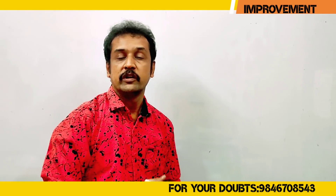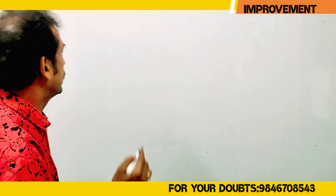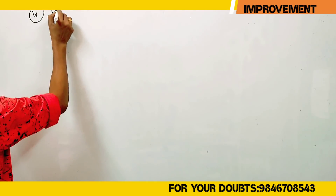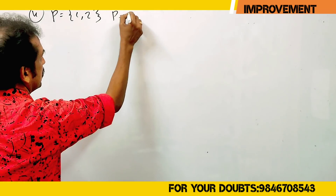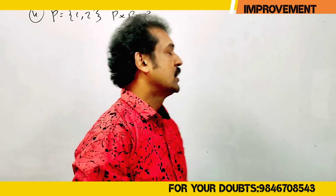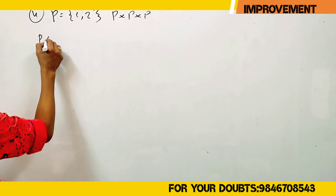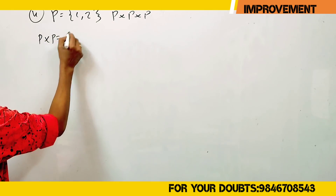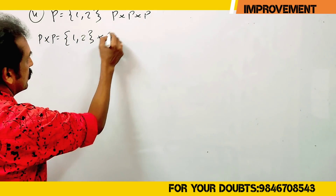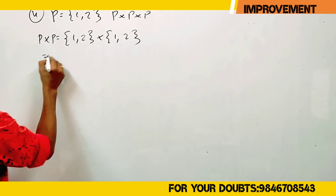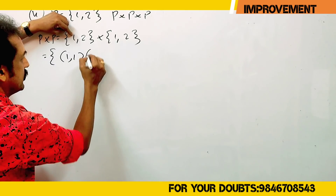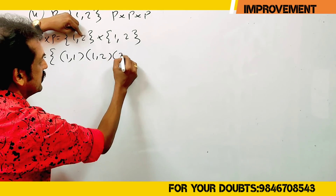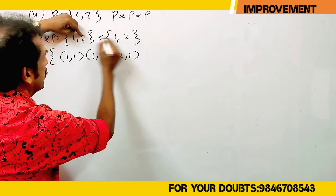The 4th question: P equals the set {1, 2}. Find P cross P cross P. P cross P equals {(1,1), (1,2), (2,1), (2,2)}.